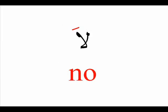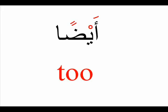The other word is La, and La is used to say 'no'. The other word is Aydan. Aydan is used to say 'too' or 'also', but it's not used to say 'too much' — it's used to say 'too' as in 'me too'. For example, 'me too' in Arabic would be Ana Aydan.